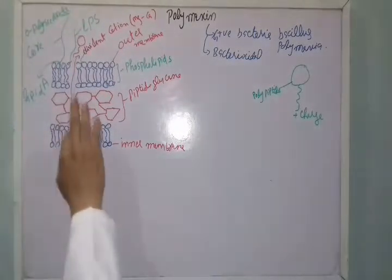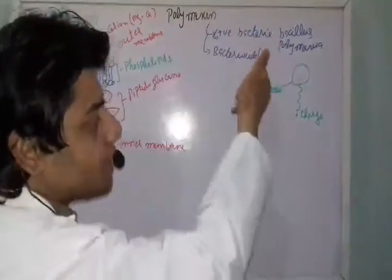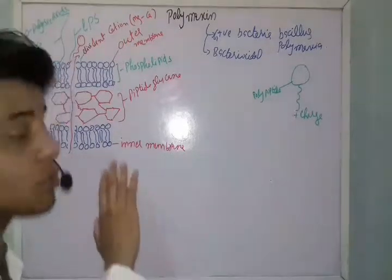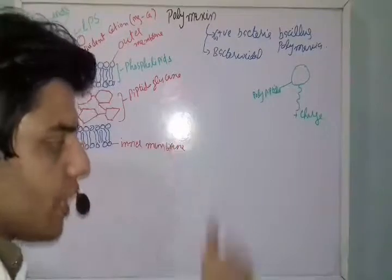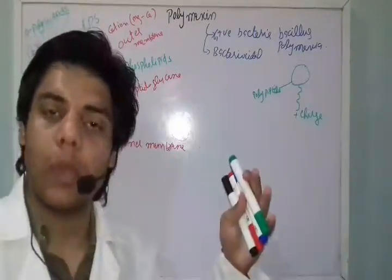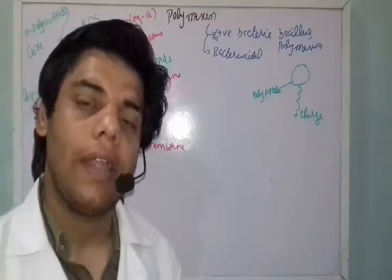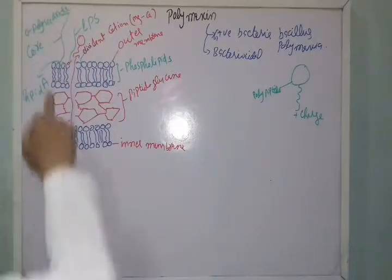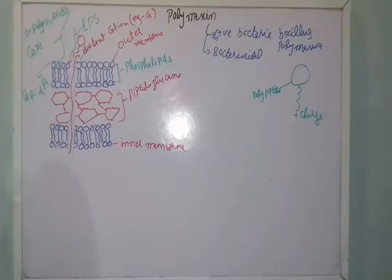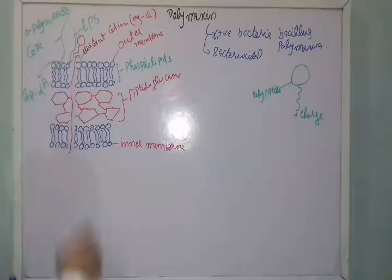Once these ions are displaced, the contents present inside the cell will be released out, or sometimes external content will be internalized - the permeability of the cell membrane increases. Due to this increased permeability the cell will shrink or swell, losing its shape. Finally the cell will burst and die. Furthermore, polymyxin not only attaches to the LPS but also ruptures the phospholipid layer. This is the mechanism of action of polymyxin B.